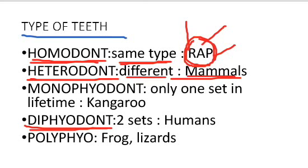In the case of humans, the dentition is diphyodont. 'Di' simply means two, so humans possess two sets of teeth in their lifetime. The first is milky teeth or deciduous teeth, which fall out after a certain period of time, and then a permanent set of teeth comes in. Organisms that get teeth twice in their whole lifetime are known as diphyodont.